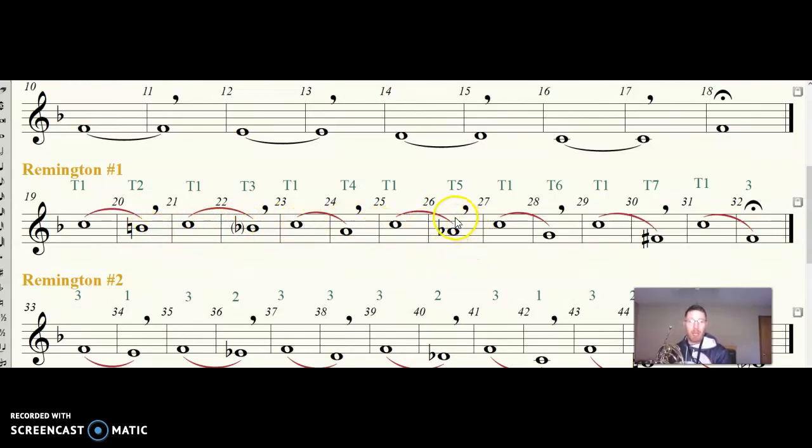Measure 26 is A flat. You may want to review that fingering in the back of your book. And measure 30 is F sharp. You may want to review that fingering in the back of your book as well, pages 46 and 47. However, for this Remington exercise, Mr. Cronin specifically wrote it out for you to use trigger for all of these notes.